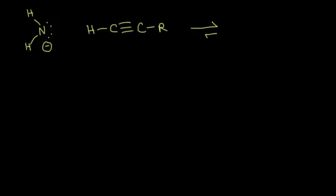Terminal alkynes can function as weak acids if you react them with a very strong base, something like sodium amide — Na⁺ NH₂⁻ — which is a very strong base. If the amide anion functions as a base, a lone pair of electrons on the nitrogen is going to take this proton right here. This is the acidic proton on terminal alkynes, and that leaves these electrons to kick off onto the carbon.